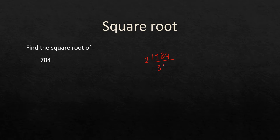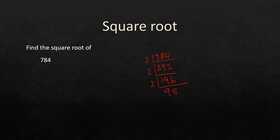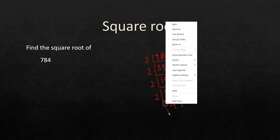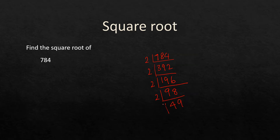Dividing repeatedly by 2: 784 ÷ 2 = 392, ÷ 2 = 196, ÷ 2 = 98, ÷ 2 = 49. And 49 we know is divisible by 7 — 7 times 7 is 49.